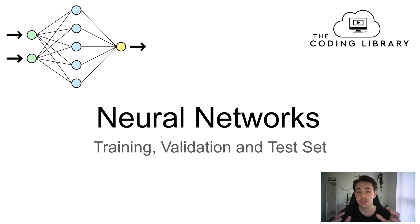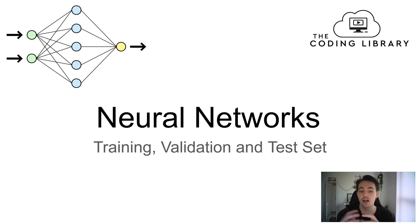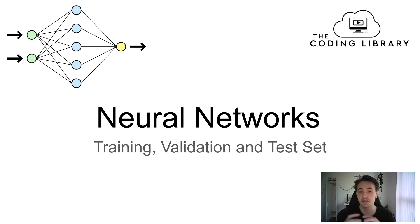These sets are very essential when we're training neural networks — to have some data that we can train a neural network on, and then validate and see how our neural network performs during training on a validation set that it hasn't seen before. And then at the end, we have a test set where we're actually testing the neural network on data it hasn't seen before.